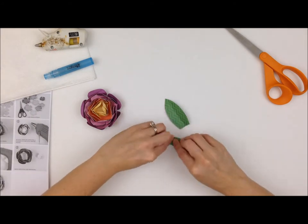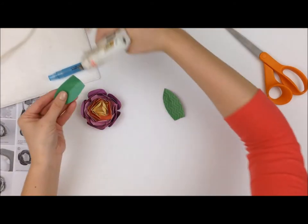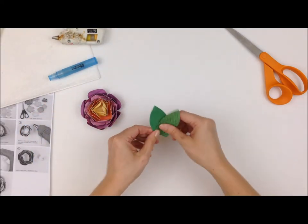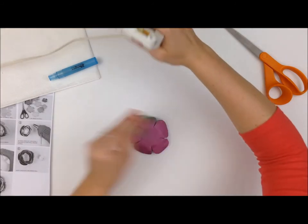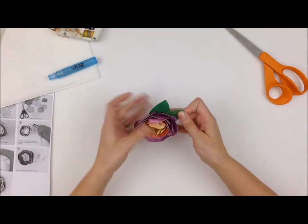And then I'm going to glue the leaves to the back side of the flower. I just want to make sure that they're situated in such a way that they're not sticking out too far and that they look really nice with the petals that they are behind. And then it's time to add the brooch pin.